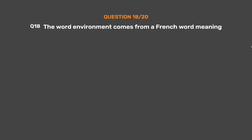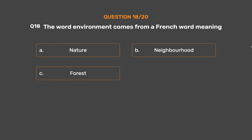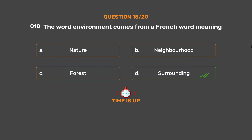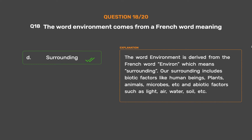Question No. 18. The word 'environment' comes from a French word meaning? Option A: Nature. Option B: Neighborhood. Option C: Forest. Option D: Surrounding. The correct answer is Option D: Surrounding. The word 'environment' is derived from the French word 'environ', which means surrounding. Our surroundings include biotic factors like human beings, plants, animals, microbes, etc., and abiotic factors such as light, air, water, soil, etc.